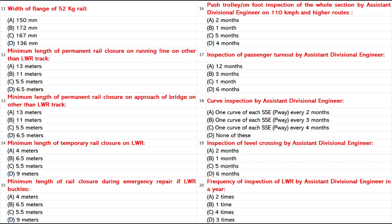Minimum Length of Permanent Rail Closure on Approach of Bridge on other than LWR track: A. 13 mm.